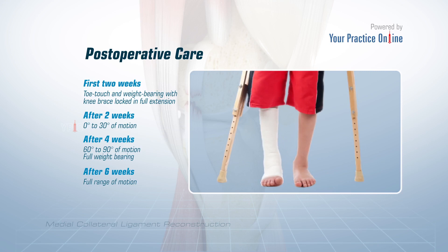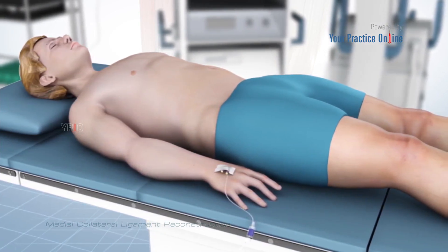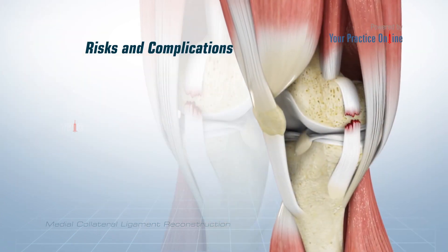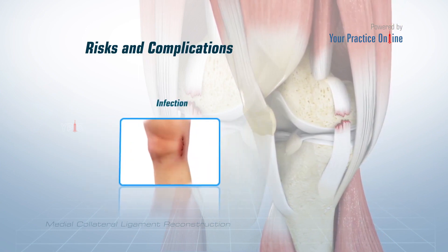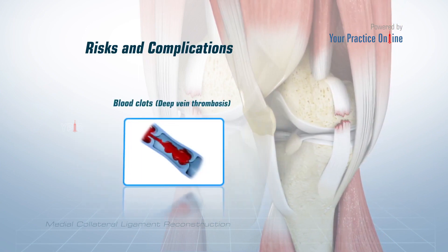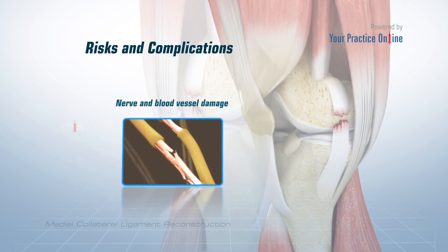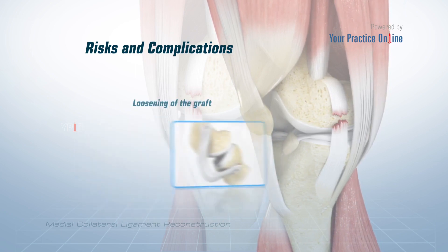Crutches are often required until you regain your normal strength. Knee stiffness and residual instability are the most common complications associated with MCL reconstruction. Other possible complications include numbness, infection, blood clots or deep vein thrombosis, and nerve and blood vessel damage, failure of the graft, and loosening of the graft.